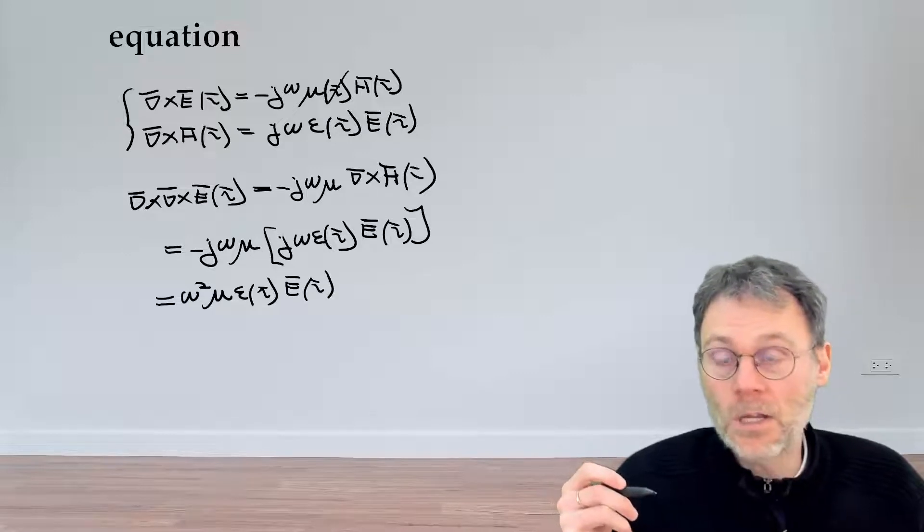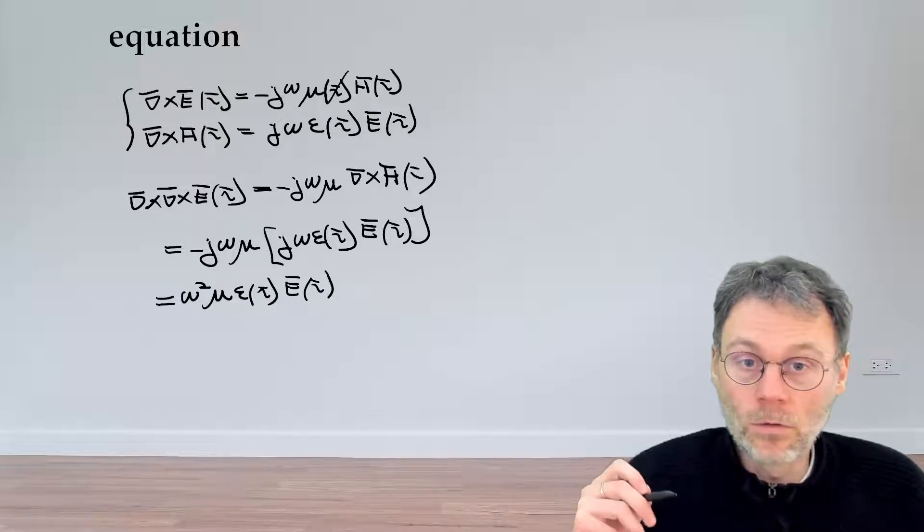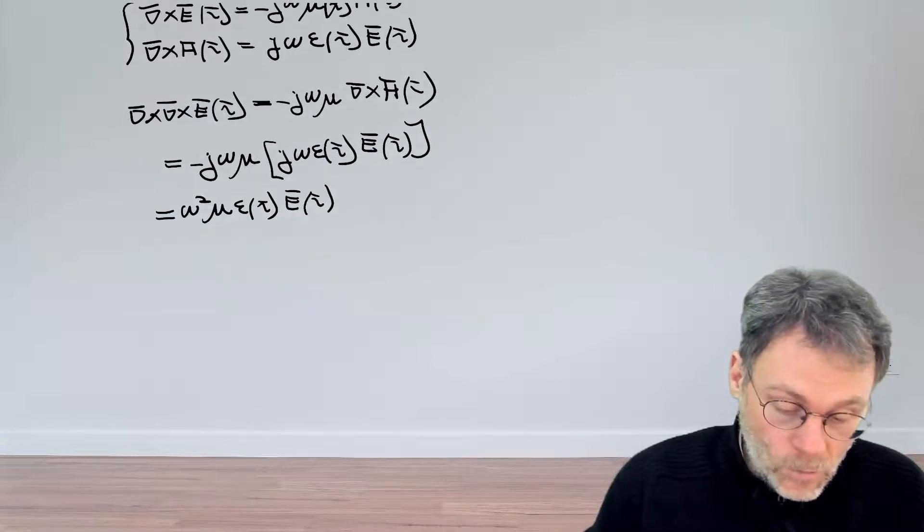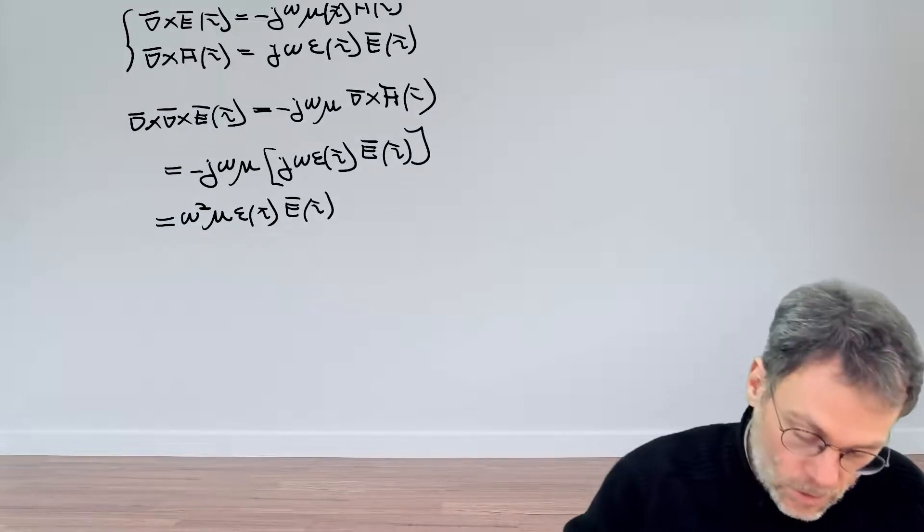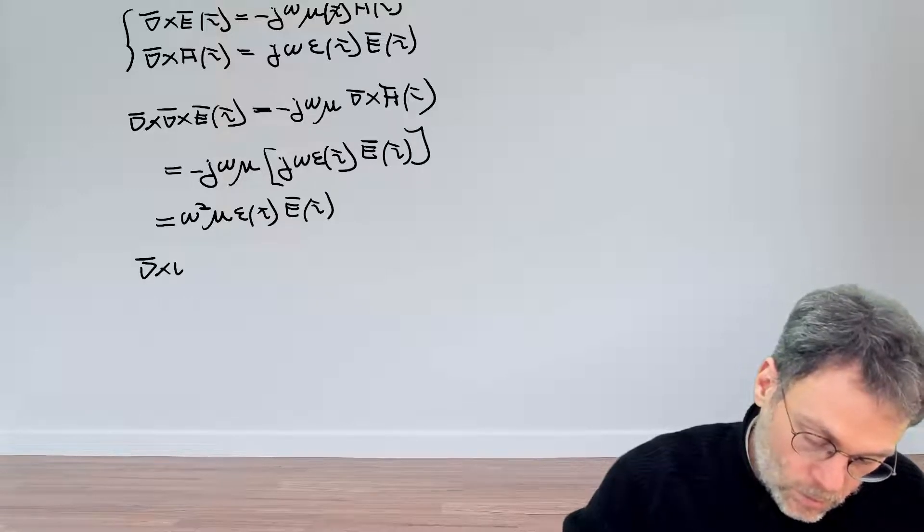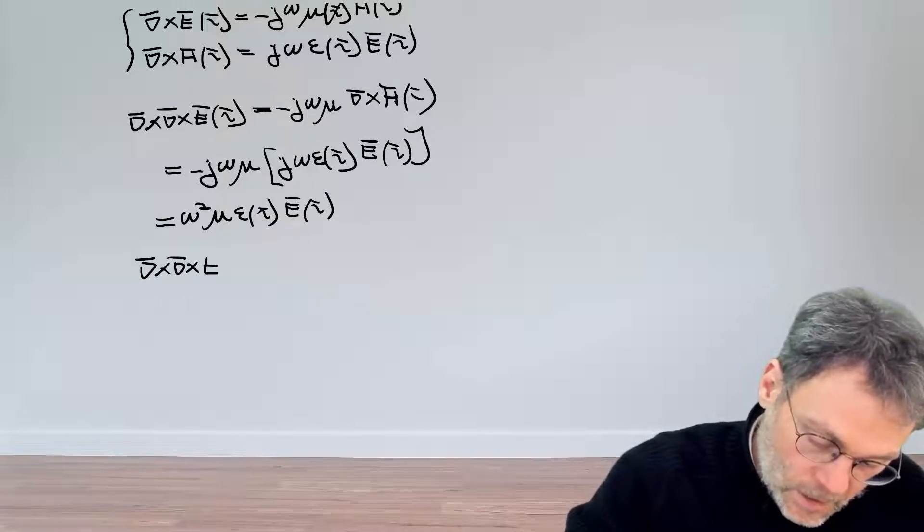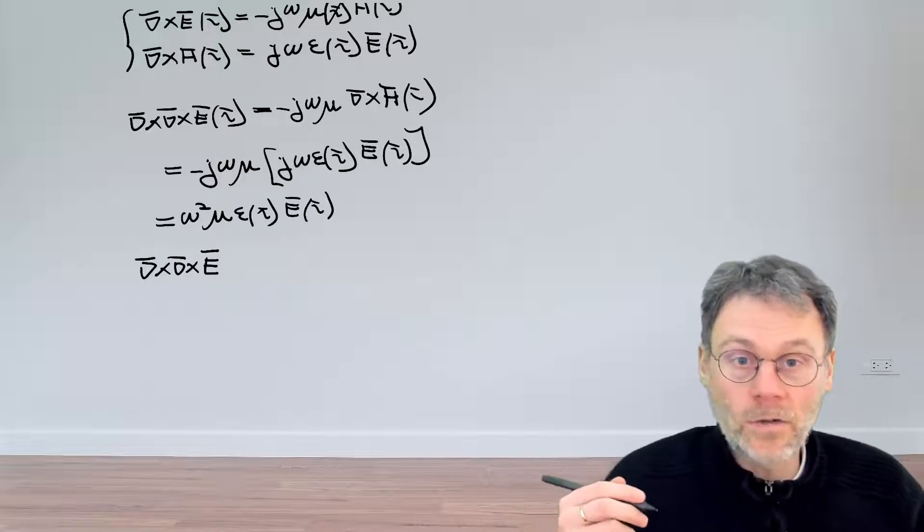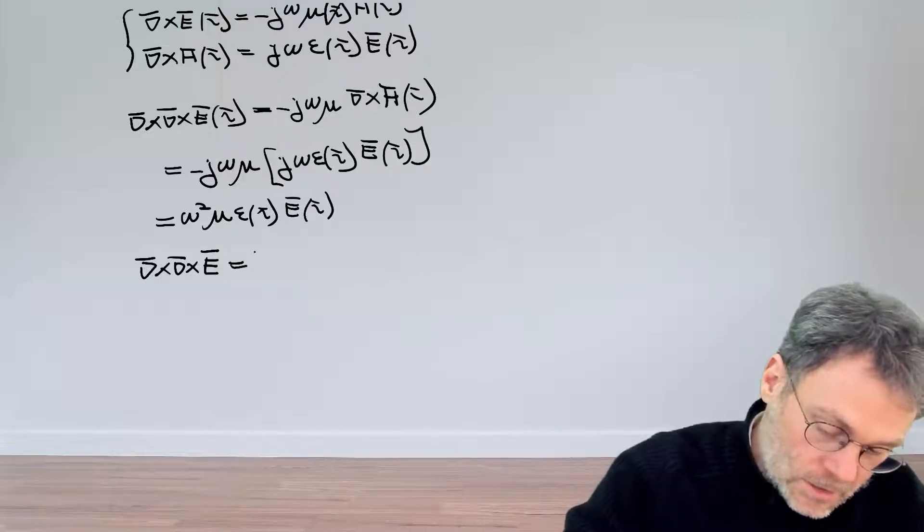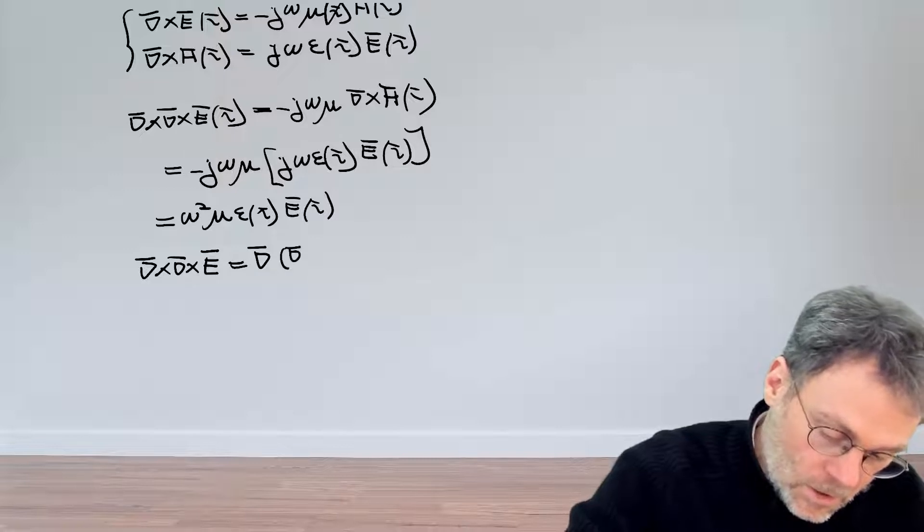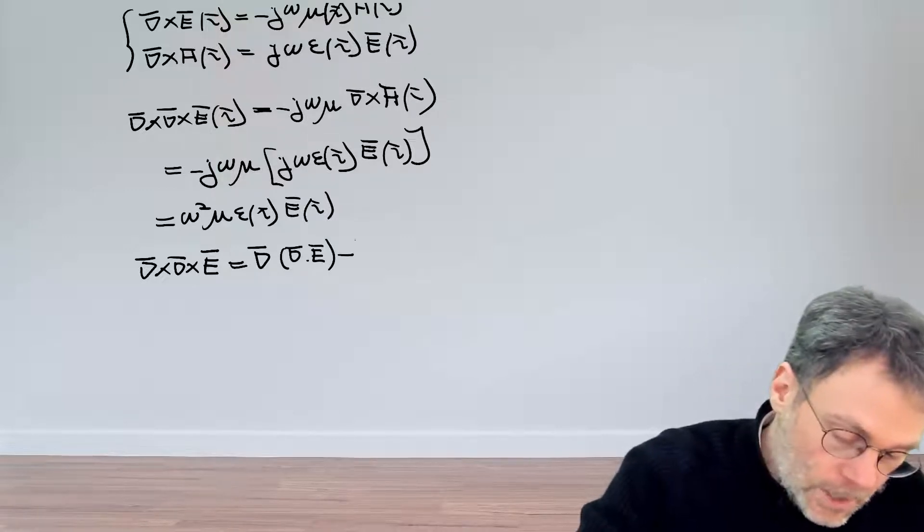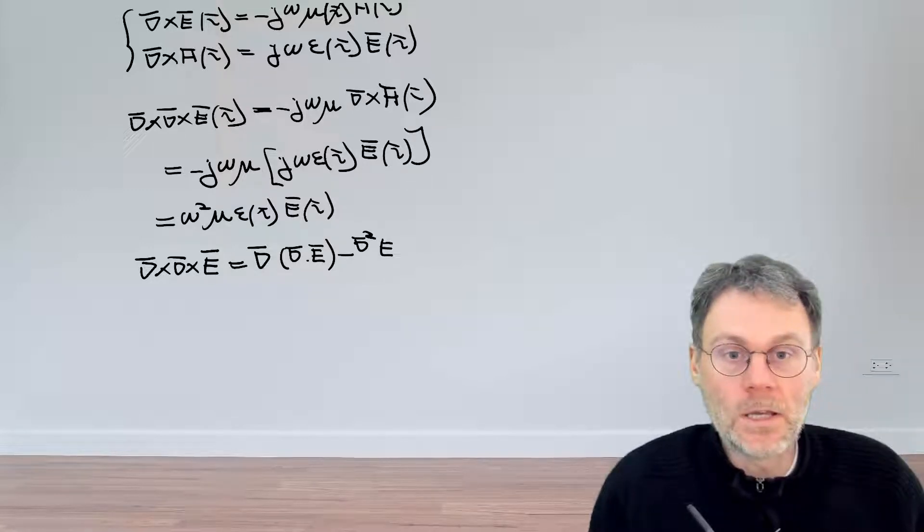Okay, mission achieved. We have a single equation with a single unknown. But let's see if we can simplify this a bit further. And the way we're going to do that is making use of a well-known or not so well-known vector identity: that the curl of the curl of a certain vector field can be written as the gradient of the divergence of that field minus the Laplacian of E.